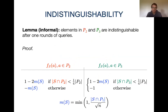For the full proof there are many more details, but this conveys the main idea of why these elements are indistinguishable. I have written again the marginal contributions of elements in P2 and P3 for reference. There are two cases to consider.